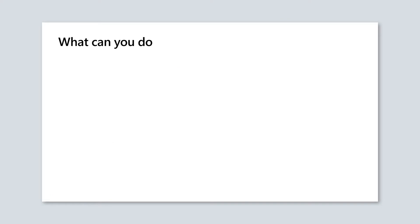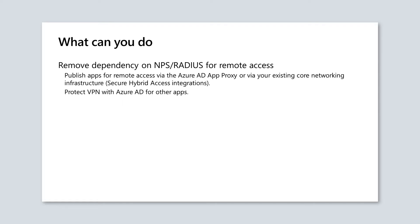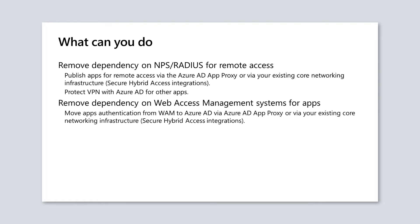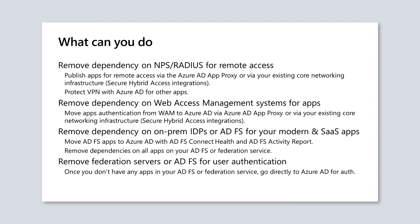Now the question is: what can you do? Let us bring up four different things you can start thinking about and deploy today with your Azure Active Directory. First, you can remove dependency on NPS RADIUS for remote access. Second, you can remove dependency on your web access management systems for applications. Third, you can remove dependencies on on-premises IDPs or ADFS for modern and SaaS applications. And ultimately, you can remove federation servers or ADFS for user authentication. Let us go one by one to see how easy it would be to take those steps.